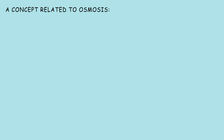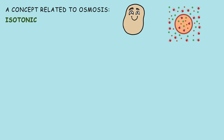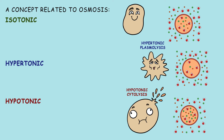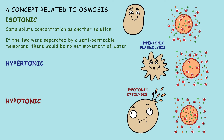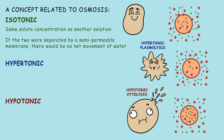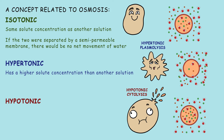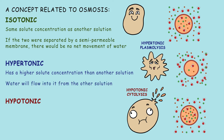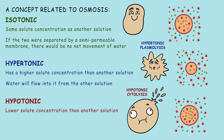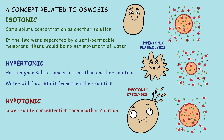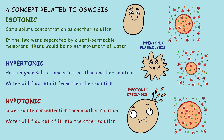A concept related to osmosis is the labeling of a solution as isotonic, hypertonic, or hypotonic. An isotonic solution is one that has the same solute concentration as another solution, so if the two were separated by a semi-permeable membrane, there would be no net movement of water. A hypertonic solution has a higher solute concentration than another solution, so water will flow into it from the other solution. Meanwhile, a hypotonic solution has a lower solute concentration than another solution, so water will flow out of it into the other solution.